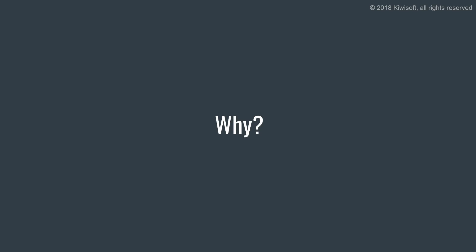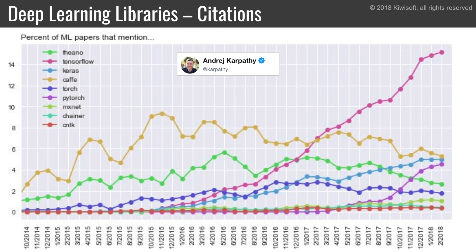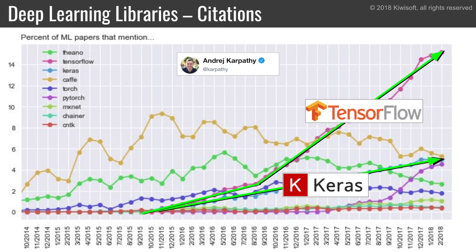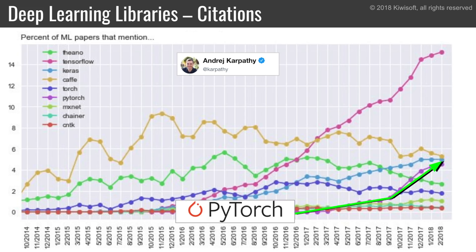So why is Google doing this? In March this year, Andrej Karpathy tweeted a nice graph comparing the percent of machine learning papers that mention each deep learning library. Clearly, Caffe, Theano, and Torch are going down, plus MXNet, CNDK, and Chainer remain pretty low, while TensorFlow and Keras are shooting up. Most Keras users use TensorFlow as the backend, so the TensorFlow curve is probably higher still. But notice that PyTorch is shooting up as well.